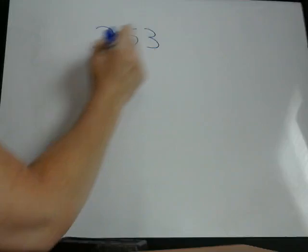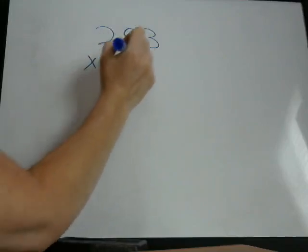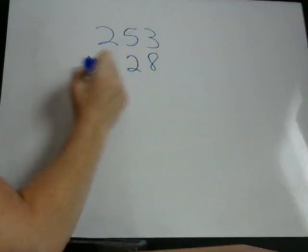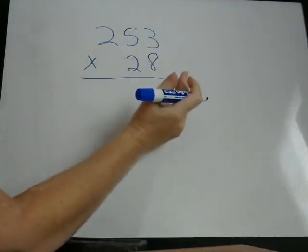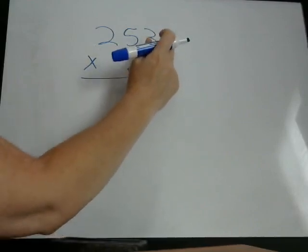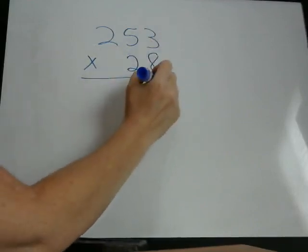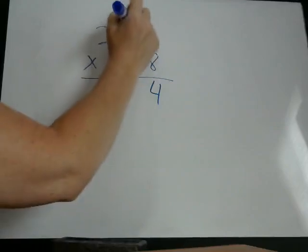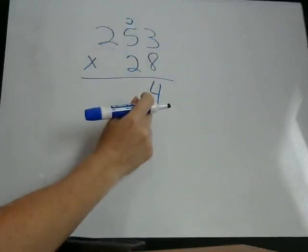Let's try 253 times 28. Same thing. We start on the right hand side with the lower number. So we have 8 times 3 is 24. But we can only put one number here, so we're going to write 2, 4, 24, like that.